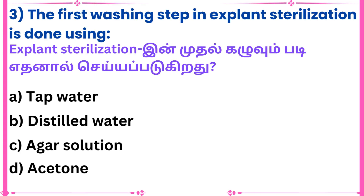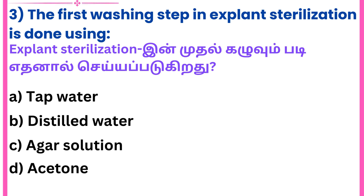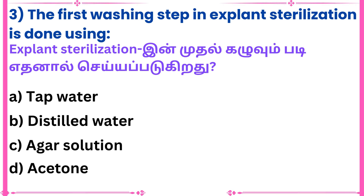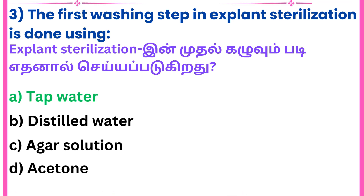Question 3: The first washing step in explant sterilization is done using which substance? Answer: Tap water.